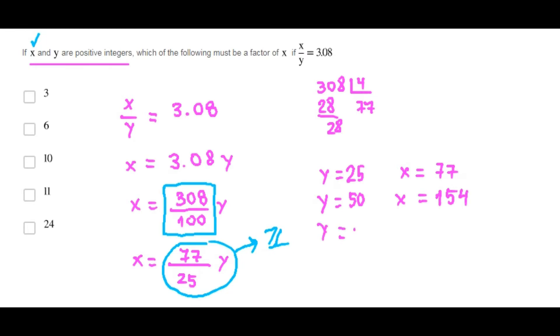As you can see, Y is always going to be a multiple of 25 in order to cancel this one and this one. And for that reason, X is always going to be a multiple of 27.